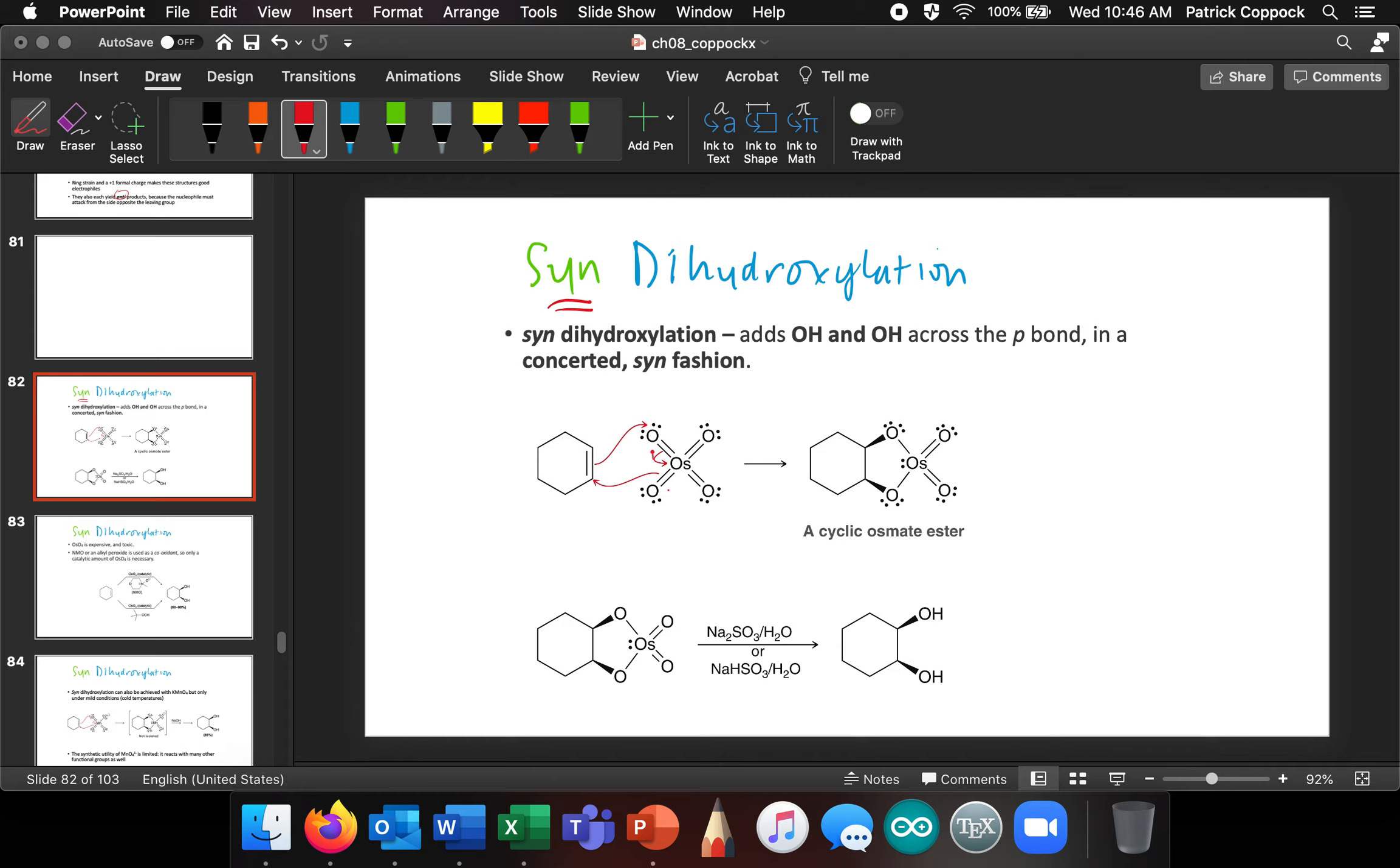So we're going to do this with osmium tetroxide. You see an OS in the middle there and four oxygens. Osmium tetroxide comes up and makes an association on the same side of this double bond.